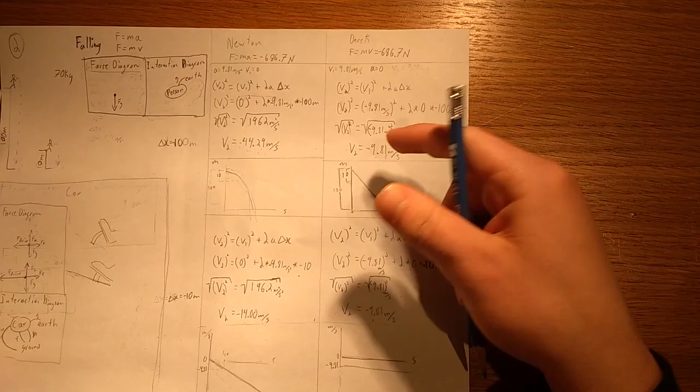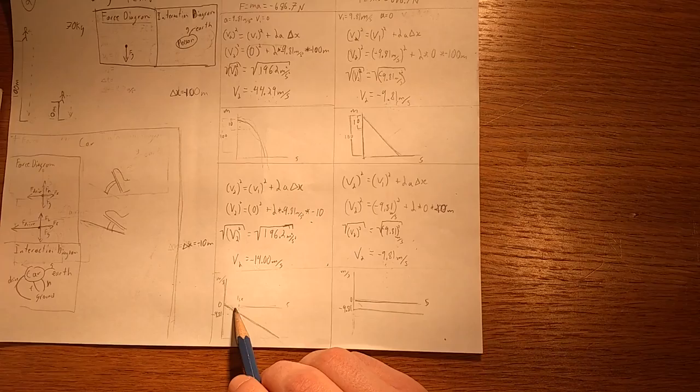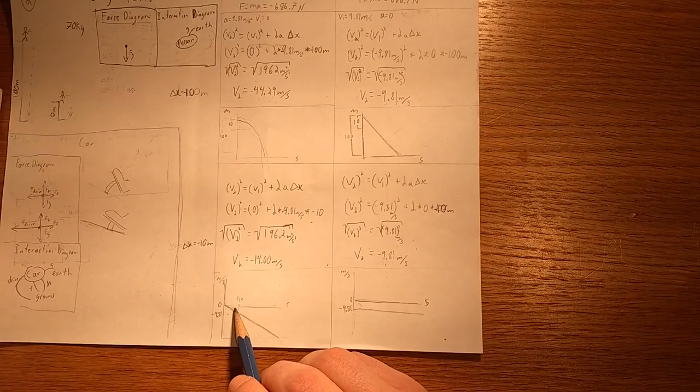But what Derek says is that, basically, it doesn't matter how far you fall, you're always going to be going at 9.81 meters per second. Not only that, but as soon as you step off the cliff, you're immediately going at 9.81 meters per second, when Newton says it'll take 1 second to get to that.